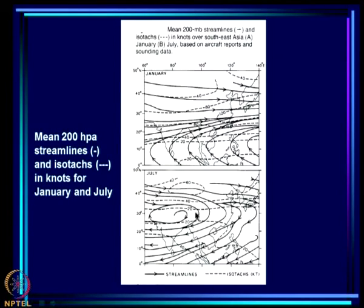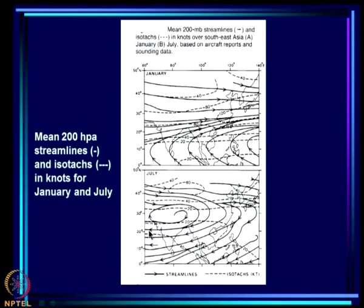What you have here is a subtropical ridge. You get the formation of a subtropical ridge in the middle and upper troposphere - this is high pressure, and the lower pressure in the upper levels is here. Naturally, because of geostrophy, the winds will be easterly - this is the tropical easterly jet which was discovered by Koteswaram in 1950. So we have a transition from purely westerly flow to easterly flow; the westerly flow in the upper levels gets replaced by easterly flow during the summer monsoon.